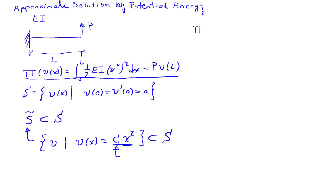Pi becomes the integral from 0 to L of 1/2 EI times the second derivative of V, which is 2C squared, DX minus P times C times L squared.